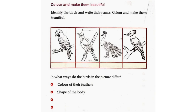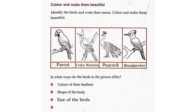The first picture is of a parrot, the second is of a Bohemian Waxwing, the third is of a peacock, and the fourth is of a woodpecker. In what ways do the birds in the picture differ? Colour of their feathers, shape of the body, size of the birds, and habitat.